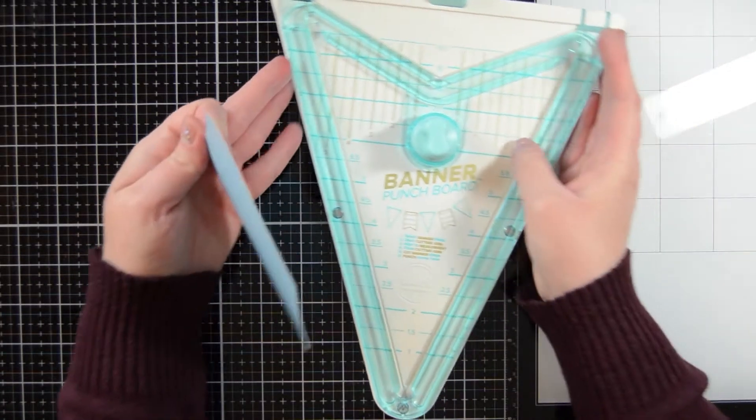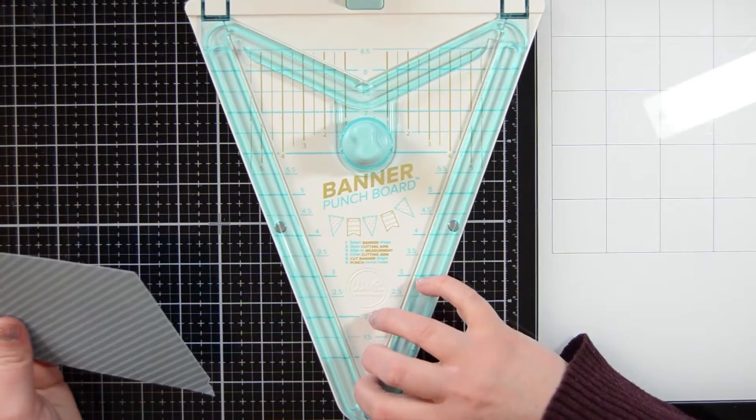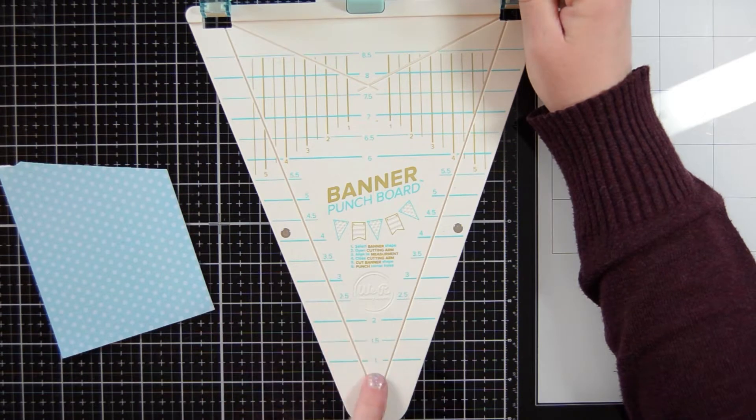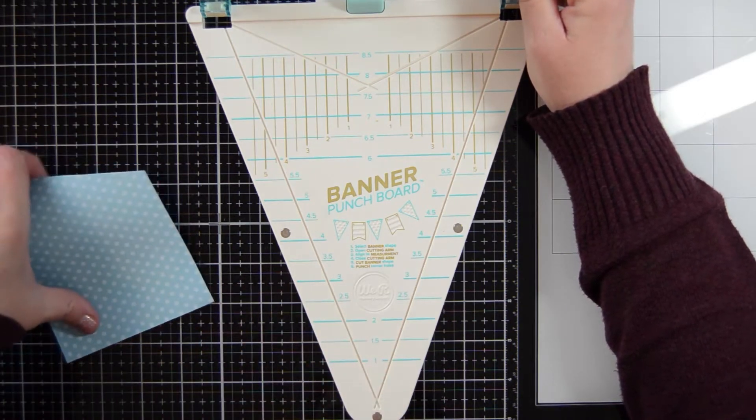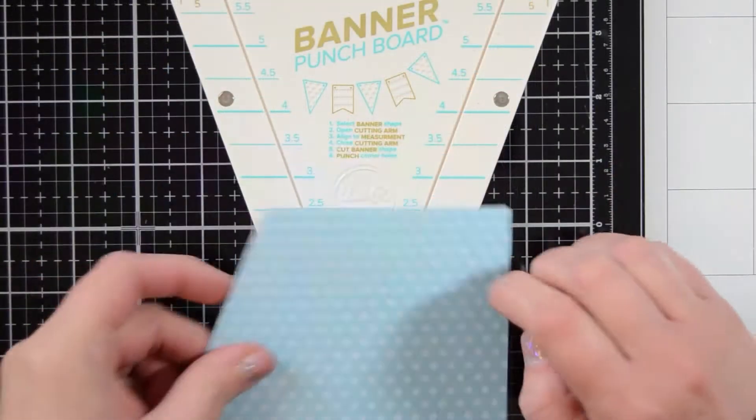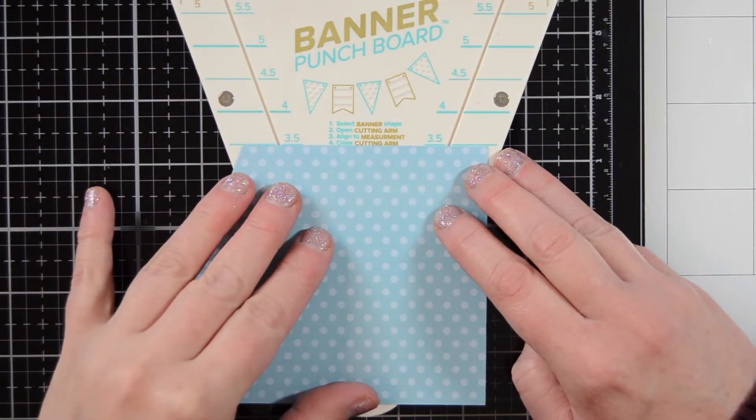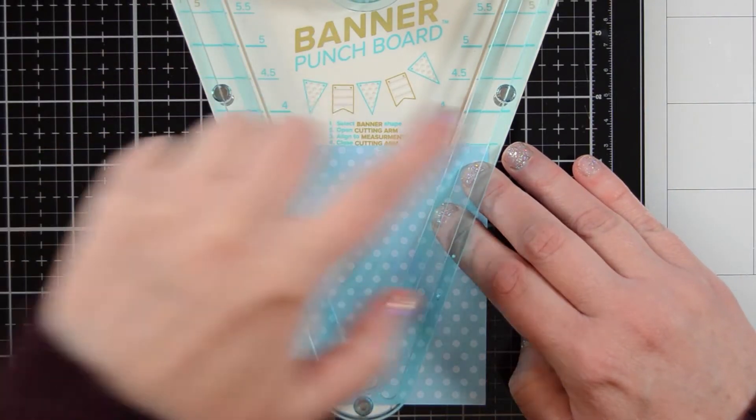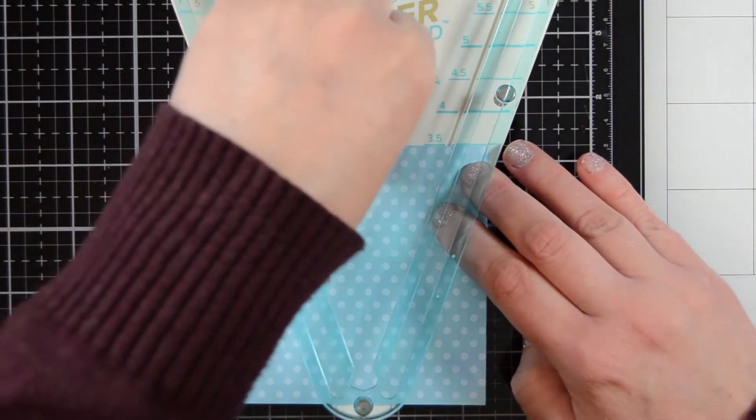So to start, I'm going to use my We Are Memory Keepers banner punch board. I'll go through this quick if you've never seen any of these punch boards before. So I'm taking my slimline paper and I'm figuring out how big I want it. So I'm going to do this one at three and a half inches. There's magnets on this. So once you put it down, your paper is going to stay put.